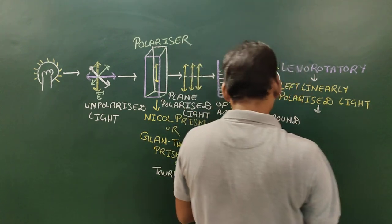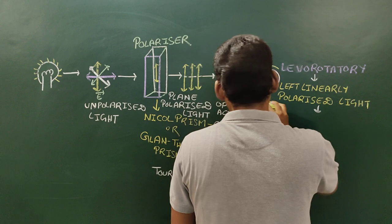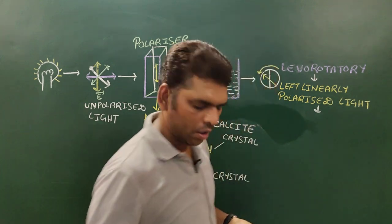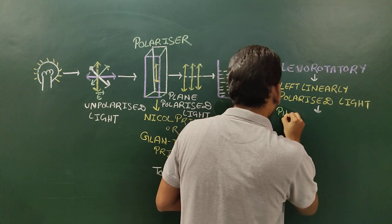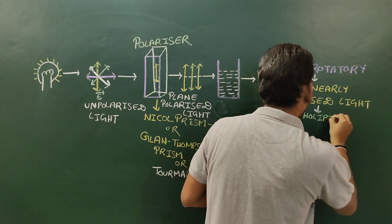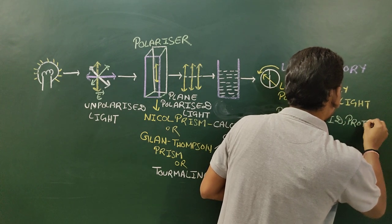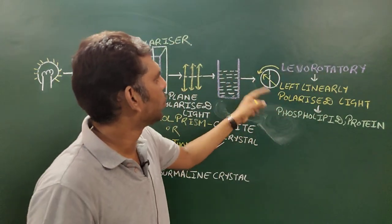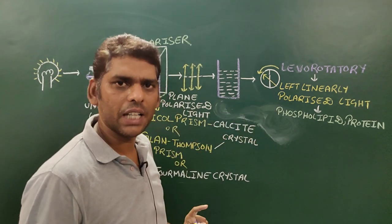Generally, phospholipids and proteins are levorotatory compounds which have the ability to rotate the plane polarized light in an anti-clockwise direction.